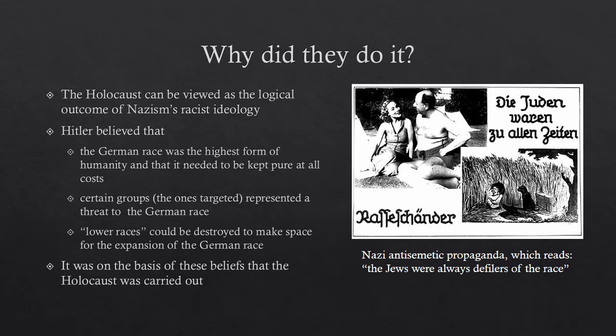The second major belief was that certain groups — the targeted groups — represented a threat to the German race by threatening the German gene pool. Hitler believed that if Germans married people of other races, the German race would eventually be polluted by the genes of other races. The third belief was that lower races could be destroyed to make space for the expansion of the German race — the idea of living space, or Lebensraum.